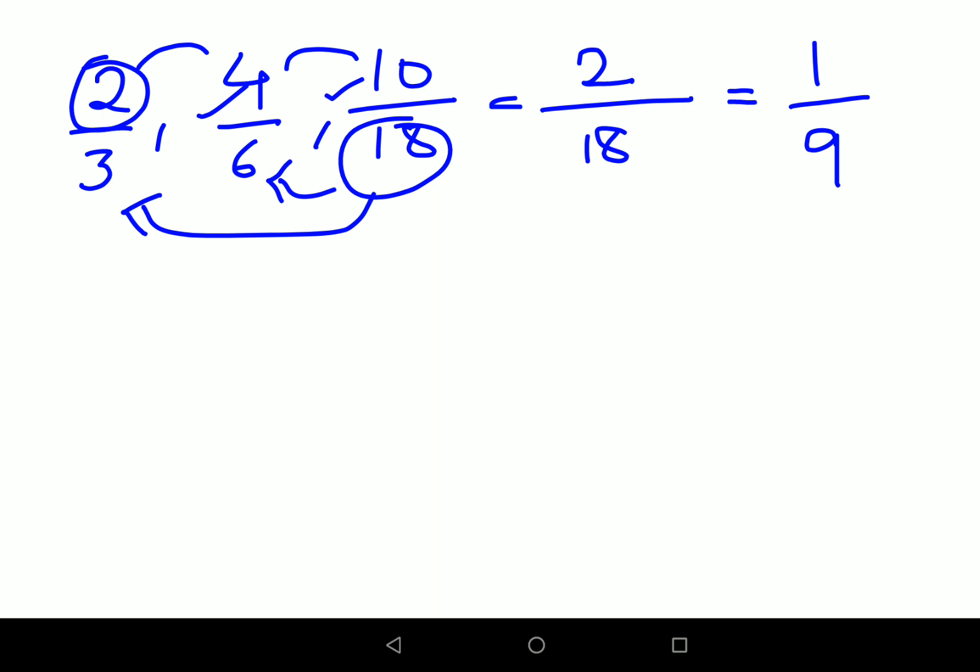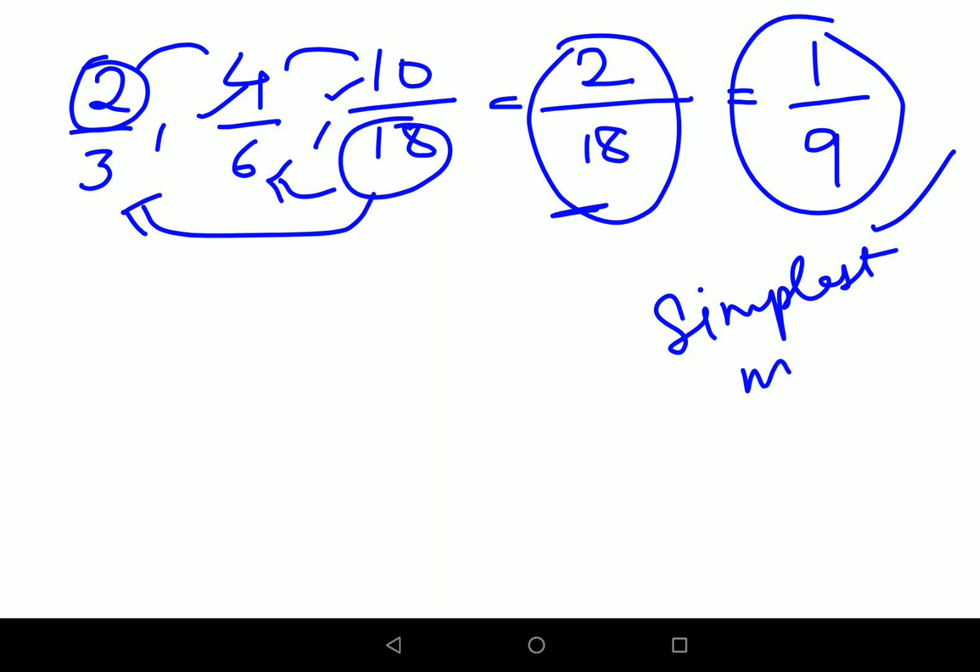So now students understand whenever you're trying to solve an MCQ, there are times when they have given you the simplest form. But if in case they have given you this particular form and they have given you a simplest form, then the simplest form has to be chosen, not the current form. That is 2 upon 18. So that is something which you all should remember. In math, you should always write your answers in simplest form or in the mixed form. These are the only two options for you all to write when it comes to fractions.